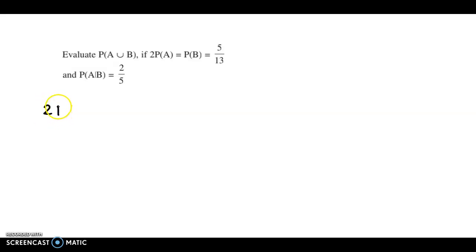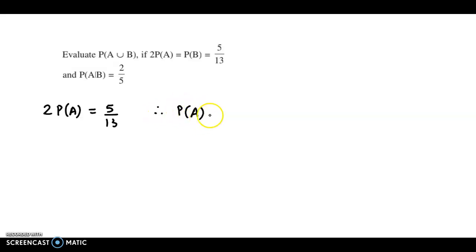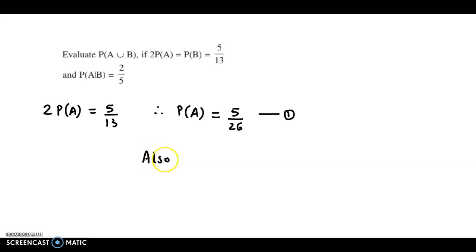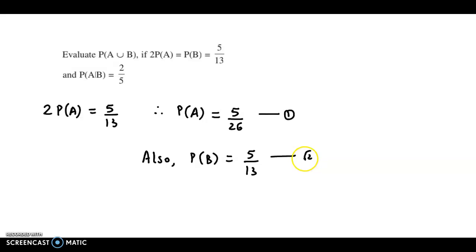Let us consider 2 times probability of A is equal to 5 by 13. From here we obtain probability of A as 5 by 26 — let us call this equation 1. Next, probability of B is 5 by 13 — let us call this equation 2.